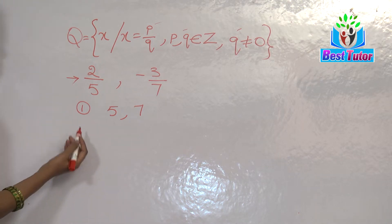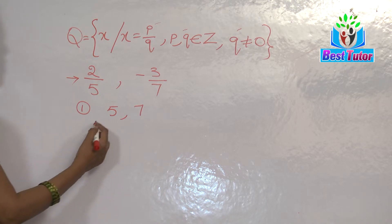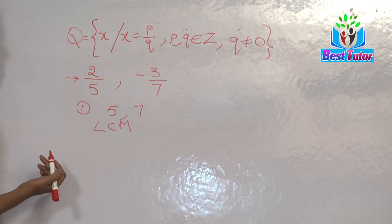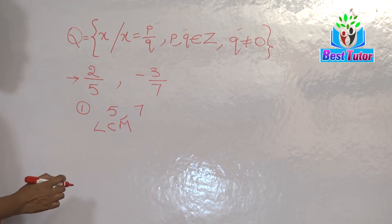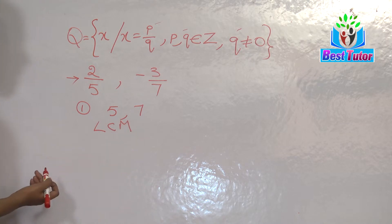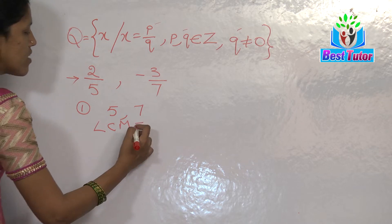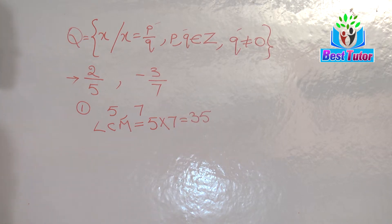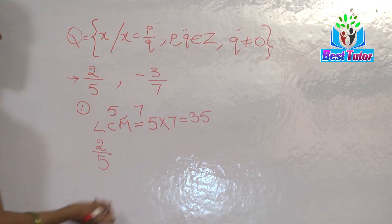Getting back to the solution: we consider the denominators five and seven, and we need to take their LCM. Five and seven are two co-prime numbers — they do not have any common factor. In such a case, the LCM is simply the product of the two numbers: five times seven, which is thirty-five. Now I would like to convert these fractions into equivalent like fractions with denominator thirty-five.